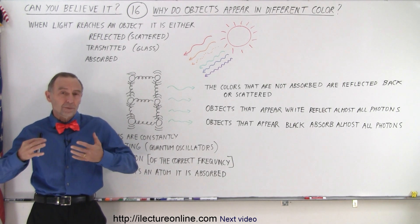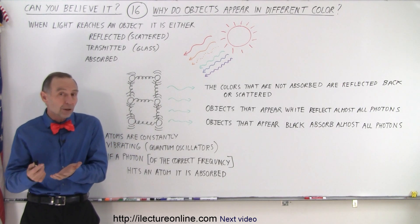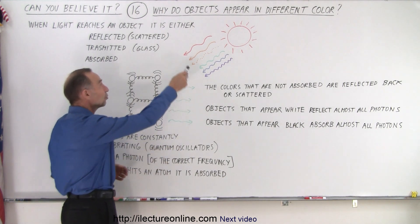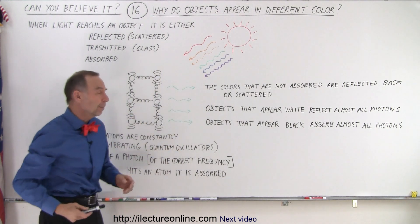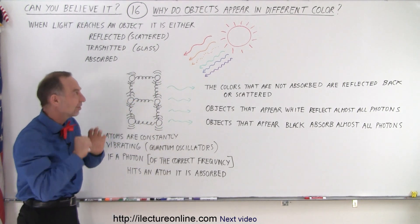So light, of course, comes from the sun. We can also artificially make light with light bulbs, but most of the light that we have during the daytime comes from the sun, and it contains all the various colors of the rainbow. I don't have a yellow pen, so I used a little dashed orange to represent yellow.